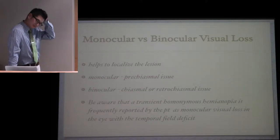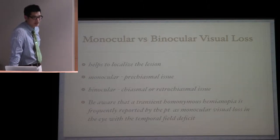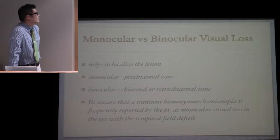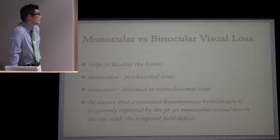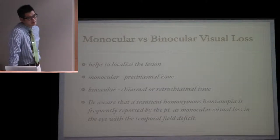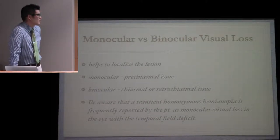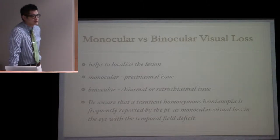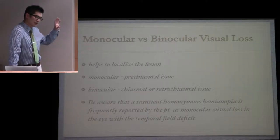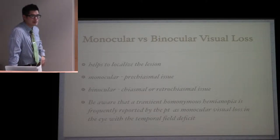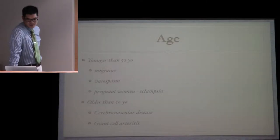Some key points when taking history: monocular versus binocular visual loss helps to localize the lesion. Typically if it's monocular, think about a lesion that's pre-chiasmal. If it's binocular, think about chiasmal or retrochiasmal. Be aware that when patients experience transient homonymous hemianopia, they often describe it as monocular vision loss, usually in the eye experiencing the temporal deficit.